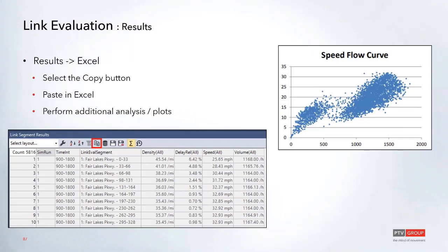All of these results can be brought into Excel if you want to perform additional analysis or create plots like scatter plots. For example, using speed and volume data together. Just click the copy button and it will store all the data on your clipboard, so you can paste it into Excel for further analysis.